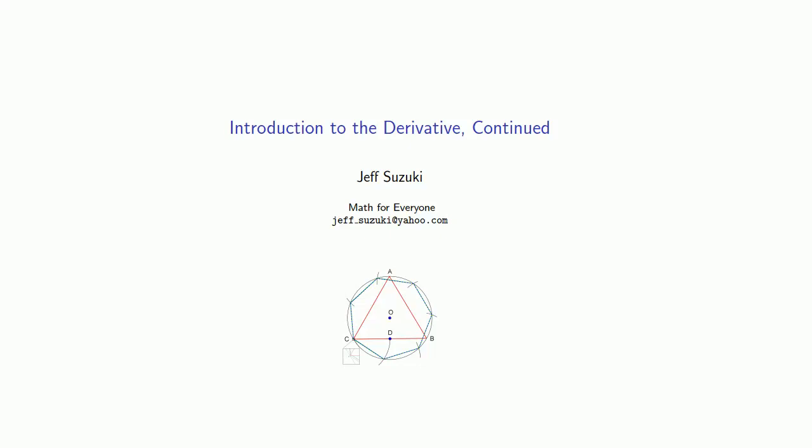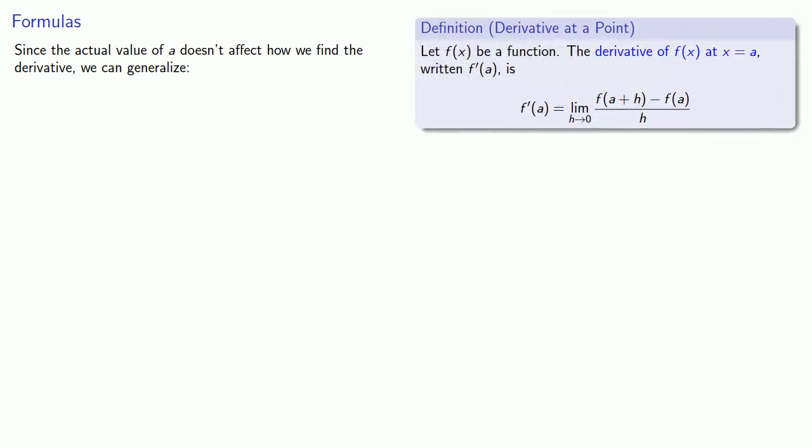So let's see what else we can do with the derivative. The first important observation is the actual value of a doesn't affect how we find the derivative. This means we can generalize our definition to the derivative and go from the derivative at a point to the idea that the derivative is a function.